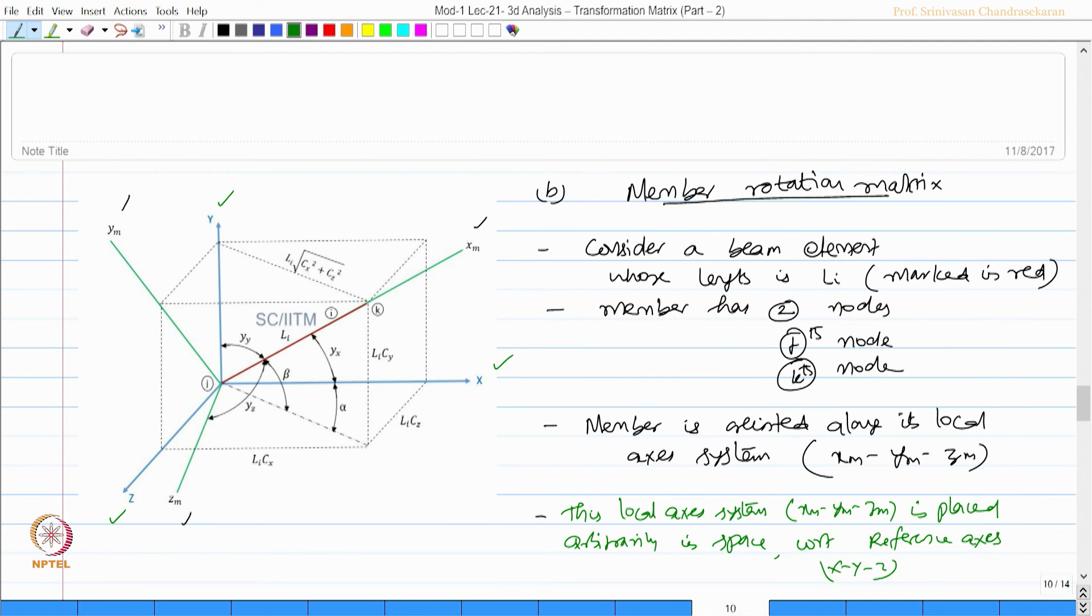On the other hand, we try to say by making this statement, we are making an indirect statement that the member is aligned arbitrarily. It is placed arbitrarily in space, because xm, ym, zm is aligned to the member. So the member is arbitrarily placed now.